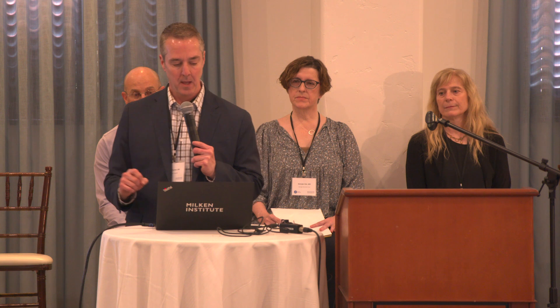Bipolar disorder is genetic — it runs in families. There are genetic disorders called mitochondrial diseases in which people have genetic mutations in proteins that code for mitochondria themselves. 16 to 21 percent of those patients have bipolar disorder, which is an approximately 20-fold increase compared to the normal population. Three high-risk genes for bipolar disorder include ANT1, DISC1, and ACAP11. What do these genes do? They all play a role in mitochondrial function and metabolism.